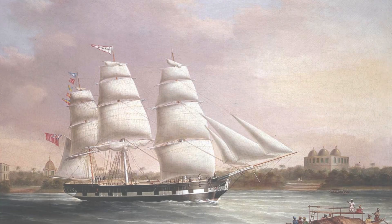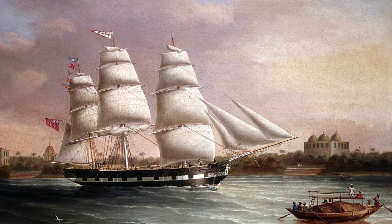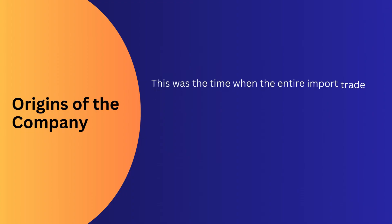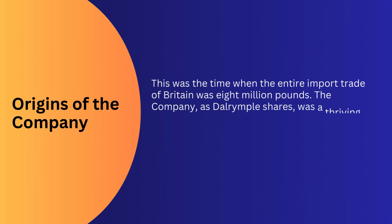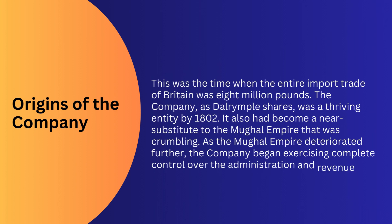Dalrymple writes about the origins of the company in 1599, when some investors entered India to conduct trade. The company accounted for nearly 1 million pounds in the 1750s — a time when the entire import trade of Britain was 8 million pounds. The company, as Dalrymple shares, was a thriving entity by 1802.